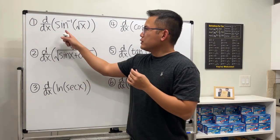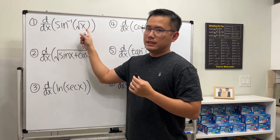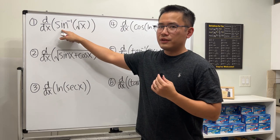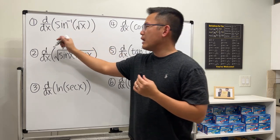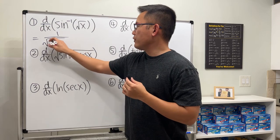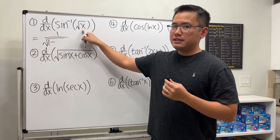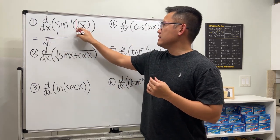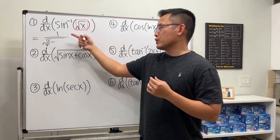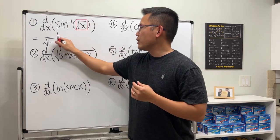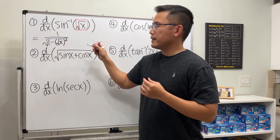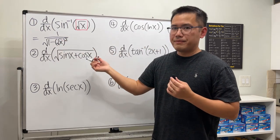The first one we have is inverse sine of square root of x. Firstly, differentiate inverse sine and that gives us 1 over square root of 1 minus whatever is inside — think of it like a box. The square root of x is inside, and you square that, so that's the first step.